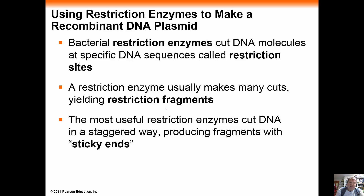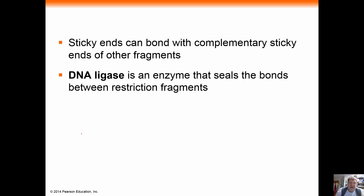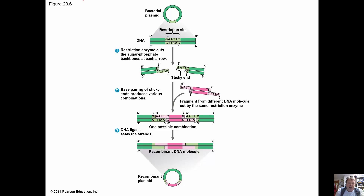We use restriction enzyme sites — protein enzymes that can bind to and cut specific sequences of DNA, called restriction sites. Restriction enzymes bind to those restriction sites and create staggered cuts that produce what we call sticky ends. Those sticky ends can bond together due to complementary base pairing, and then we use an enzyme called DNA ligase to seal those bonds together.